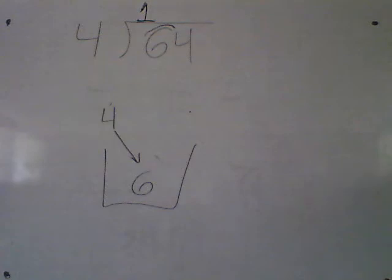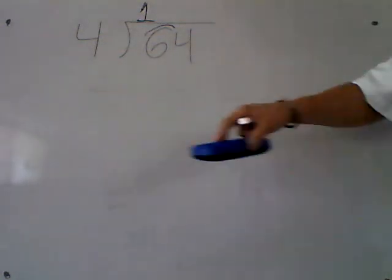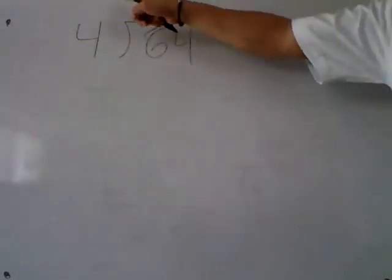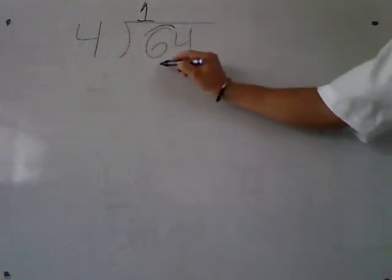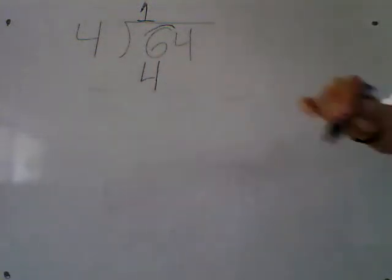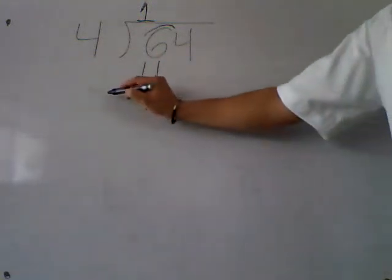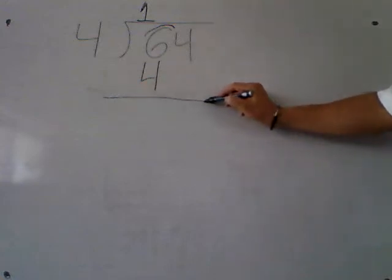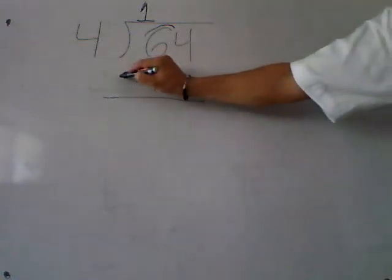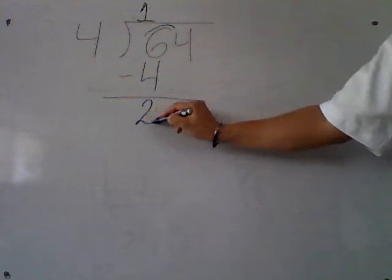Now, multiplication: 1 times 4 is 4. Write the answer: 4. Step number 2 — subtraction: 6 minus 4 is 2.